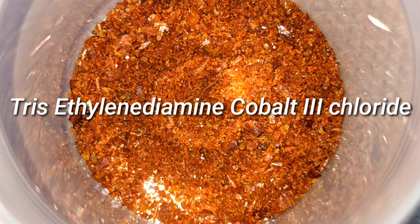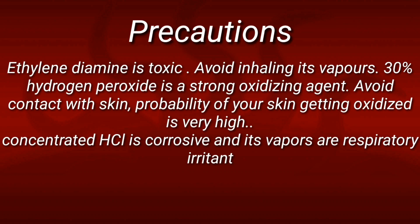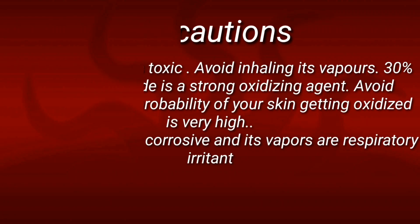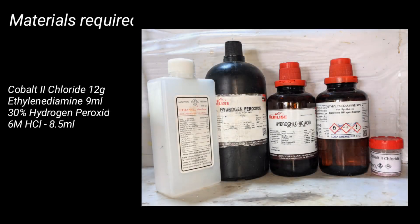Hello friends, in this video we will make the complex tris(ethylenediamine)cobalt(III) chloride. It is a coordination compound of cobalt 3+ with the ligand ethylenediamine. Materials required for this preparation include 9 milliliters of ethylenediamine, 12 grams of cobalt(II) chloride, 8.5 milliliters of 6 molar hydrochloric acid, and 10 milliliters of 30% hydrogen peroxide.